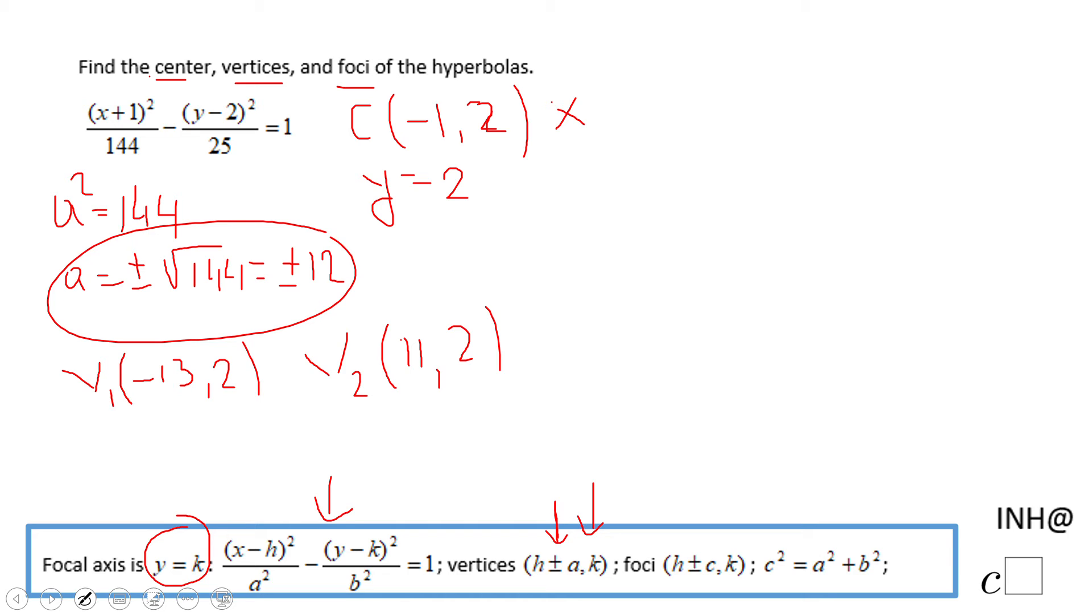For the foci, obviously, we need to look to the last thing, which says c square equals a square plus b square. So in our case, it's going to be 144 plus 25, which is going to be 169.